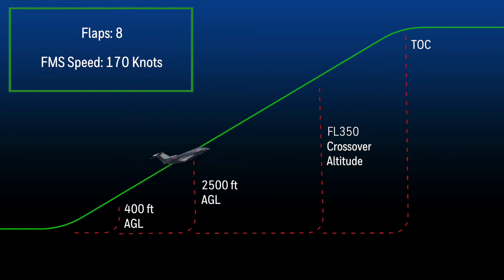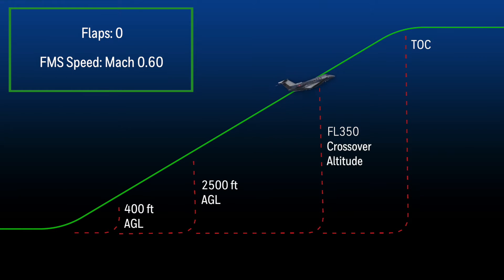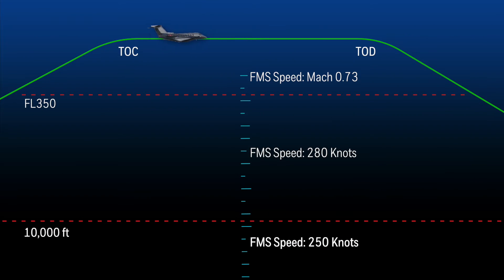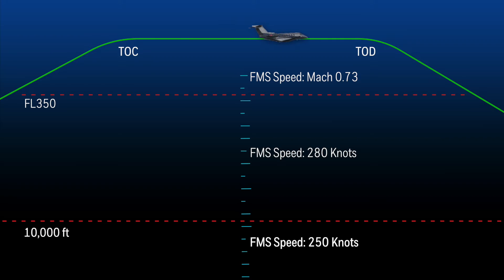As the aircraft continues to climb to altitude, the FMS target speed changes to Mach 0.60 at approximately flight level 350. When the aircraft reaches the cruise altitude, the target speed changes to the cruise speeds set in the altitude and speed tab in the flight management window.